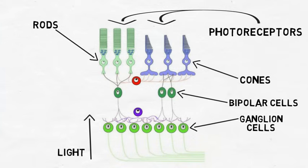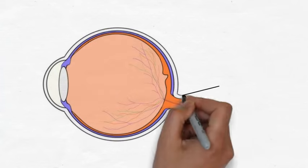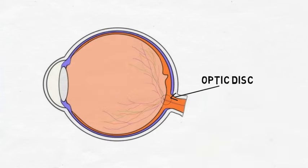Bipolar cells pass the signal onto ganglion cells, which leave the eye in a large cluster at an area called the optic disc. The optic disc doesn't contain any photoreceptors, and so represents an area of the retina that can't process visual information, creating a natural blind spot.